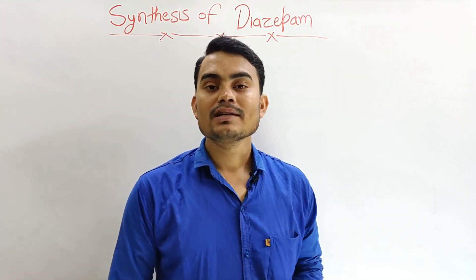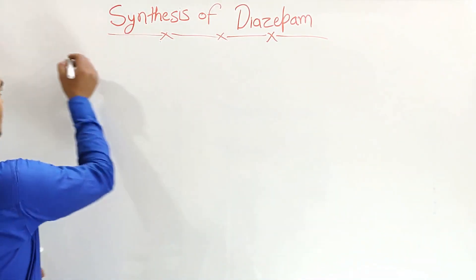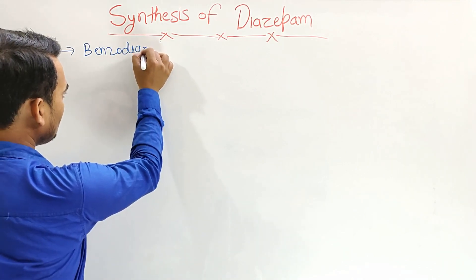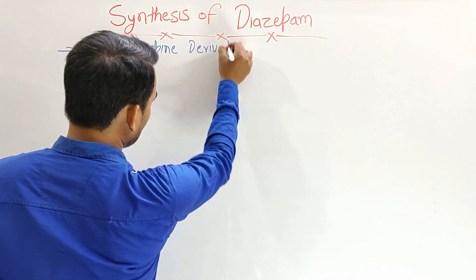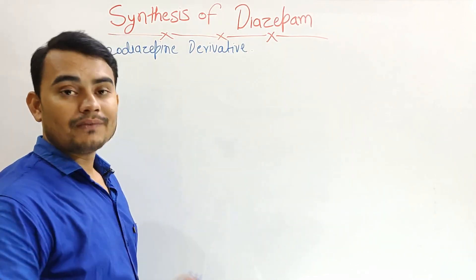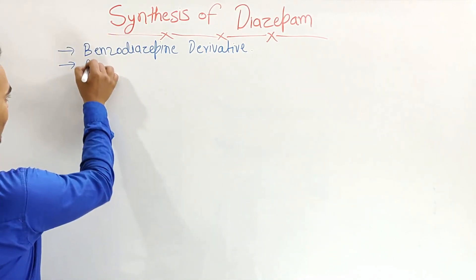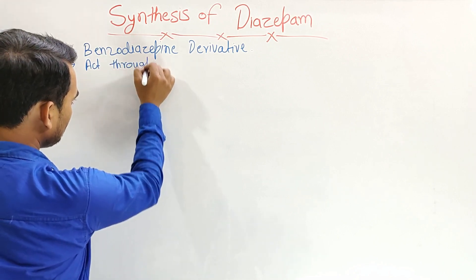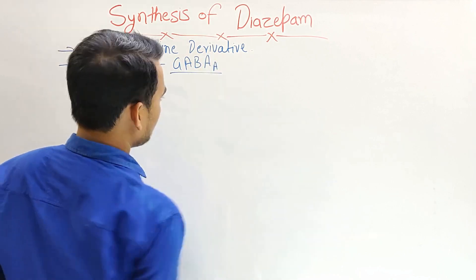What is diazepam? Diazepam is a benzodiazepine derivative. Where does it act? Diazepam acts through the GABA-A receptor.